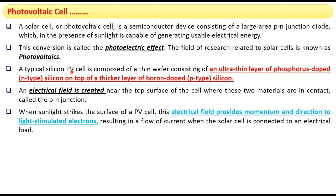A photovoltaic cell made up of silicon consists of a very thin wafer, which in turn consists of an ultra-thin layer of phosphorus-doped N-type silicon and a top thick layer of boron-doped P-type silicon. At the junction where these two materials are in contact, that is called the p-n junction, and at this area an electrical field will be created.